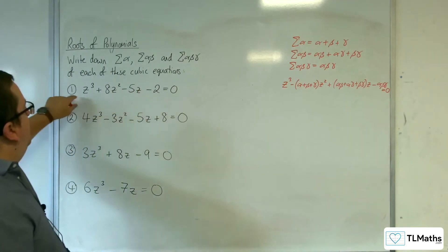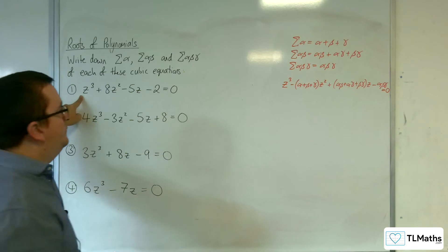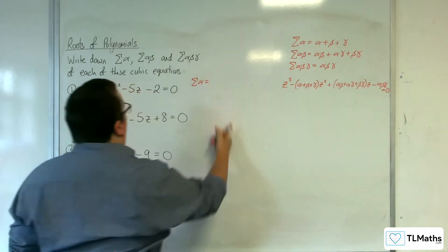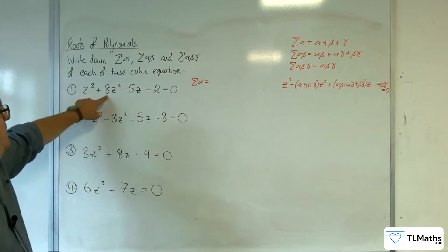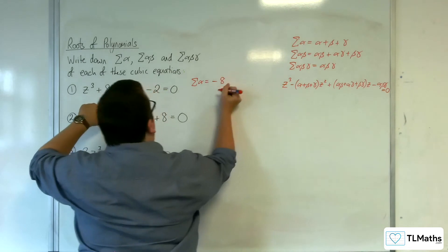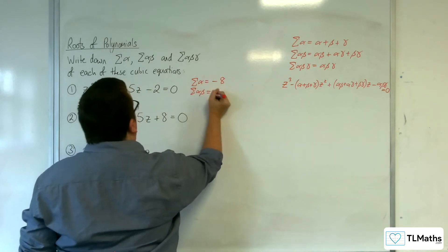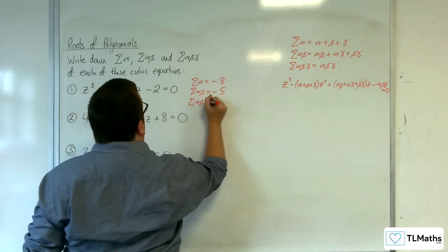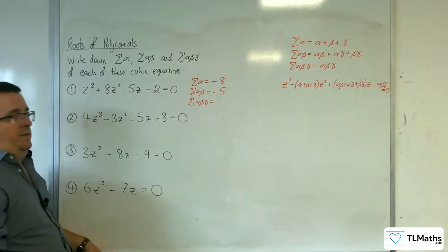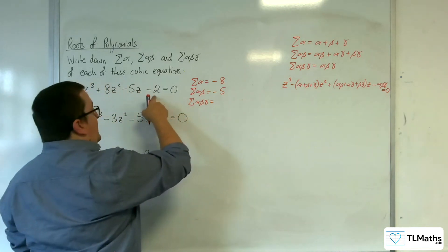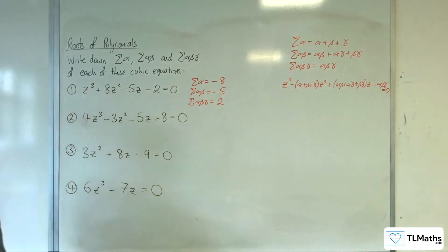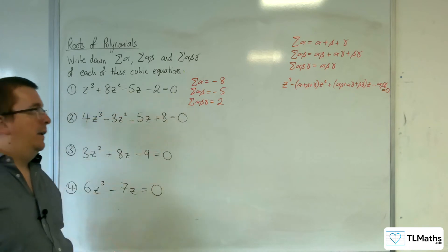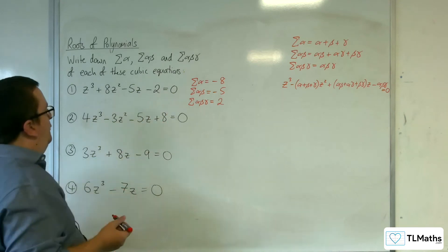With this first one, the coefficient of z cubed is already 1, so that's fine. The sum of the roots is going to be minus 8. The sum of the product pairs is going to be minus 5. And the product of the three roots is the negative of minus 2, so 2. Change the sign, keep the sign, change the sign. That's our first one.